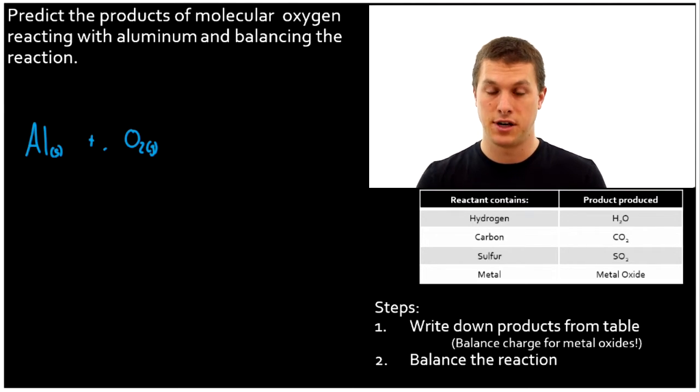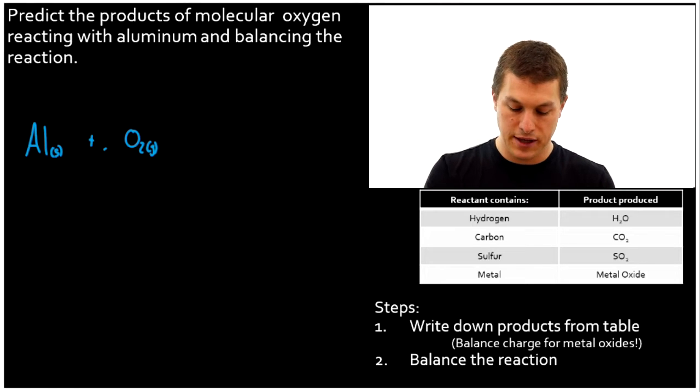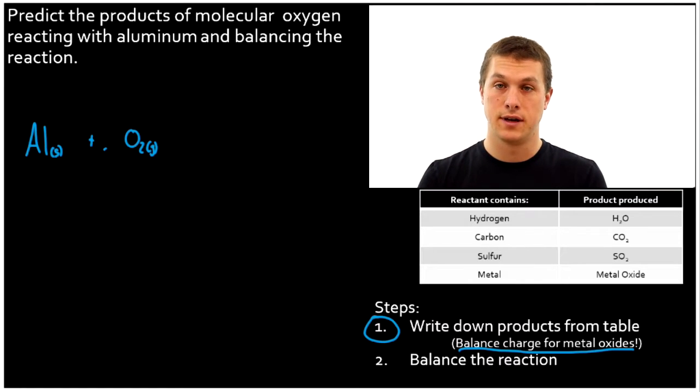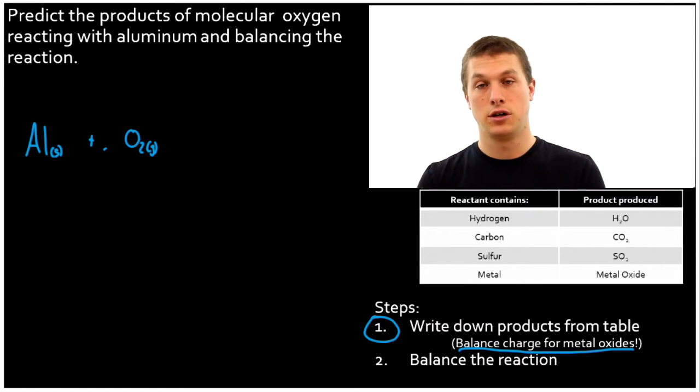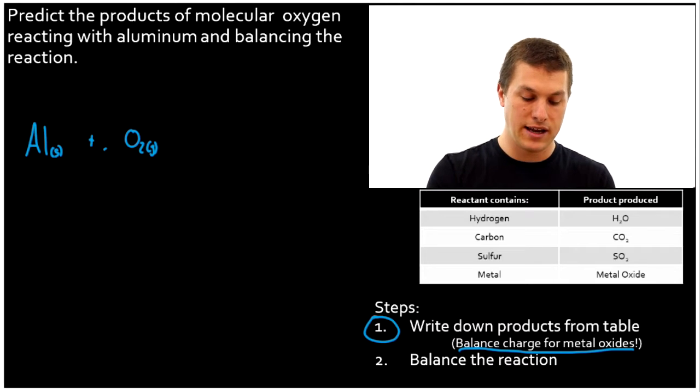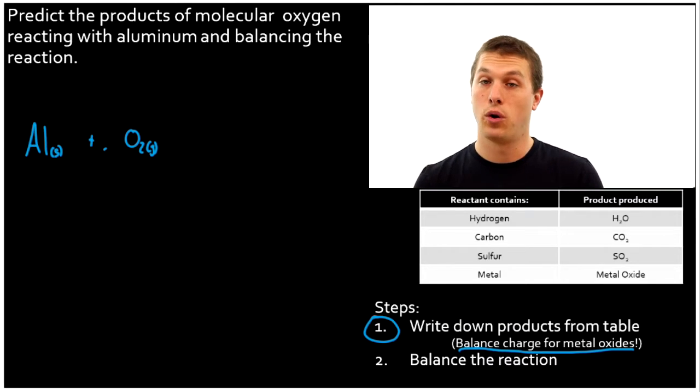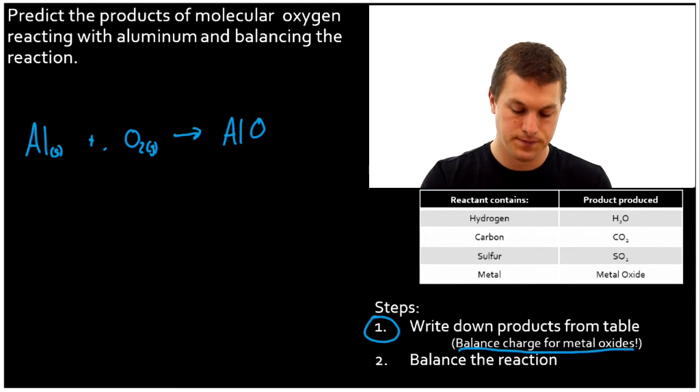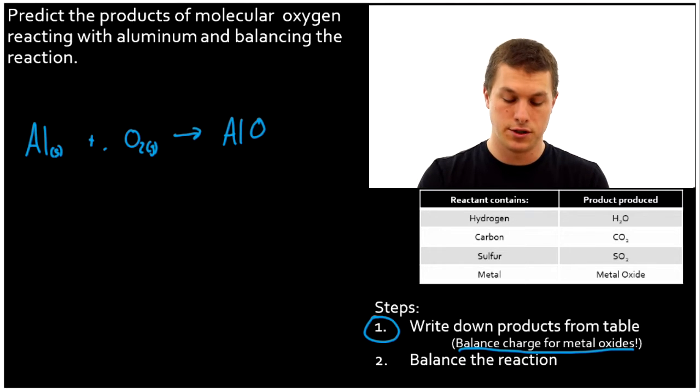And so we're going to get out aluminum and oxygen as our products. Here's where it's important to pay attention to step one. Step one says write down products from the table. And it says balance the charge for the metal oxides. So this will look a lot like balancing the charge for an acid base reaction, where we write down the sort of generic elements we know are involved and then balance the charge. So we know this is going to produce something with aluminum and something with oxygen.